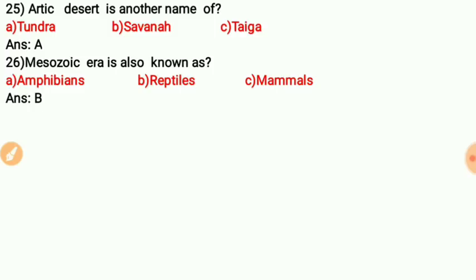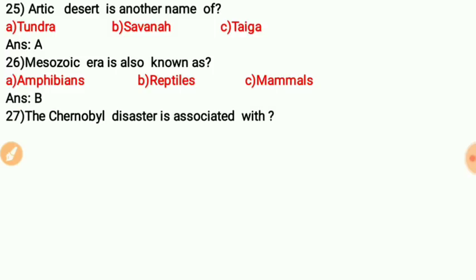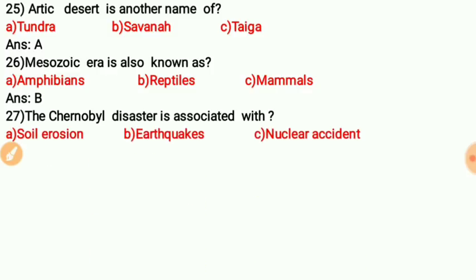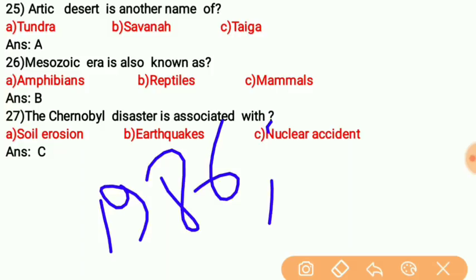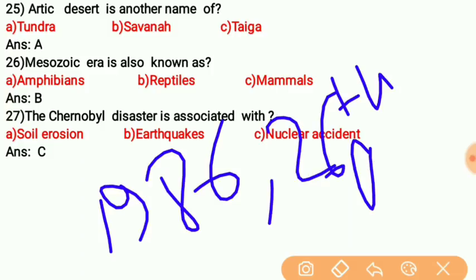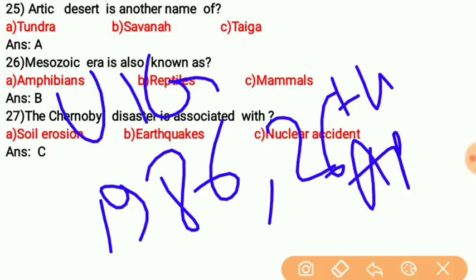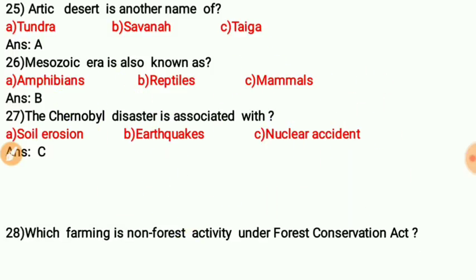Question twenty-six: The Chernobyl disaster is associated with what? The answer is nuclear accident. The Chernobyl disaster occurred on 26th April 1986 in Ukraine and was a nuclear accident.